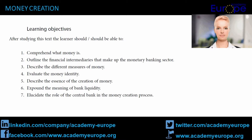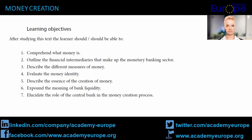Learning Objectives. After studying this text, the learner should be able to: 1. Comprehend what money is. 2. Outline the financial intermediaries that make up the monetary banking sector. 3. Describe the different measures of money. 4. Evaluate the money identity. 5. Describe the essence of the creation of money. 6. Expound the meaning of bank liquidity. 7. Elucidate the role of the central bank in the money creation process.